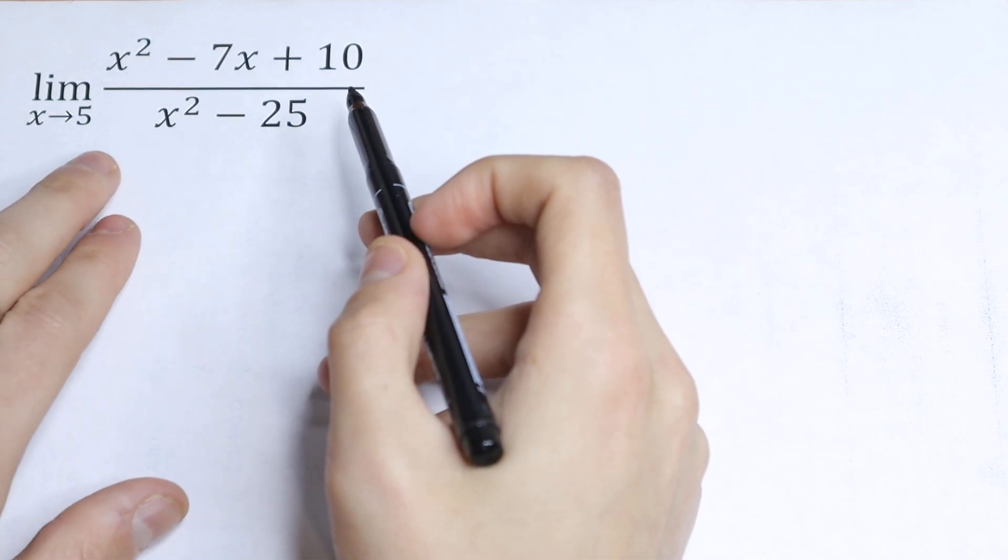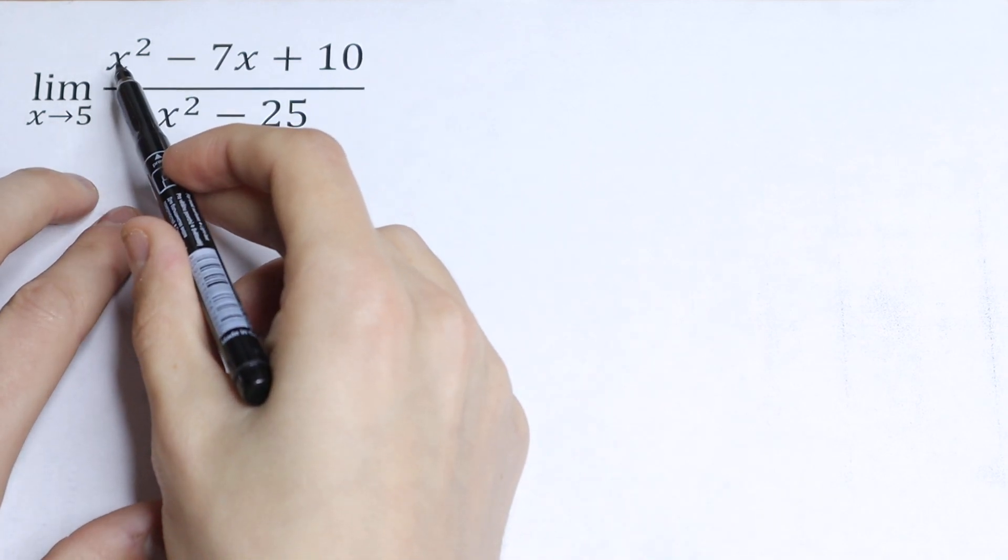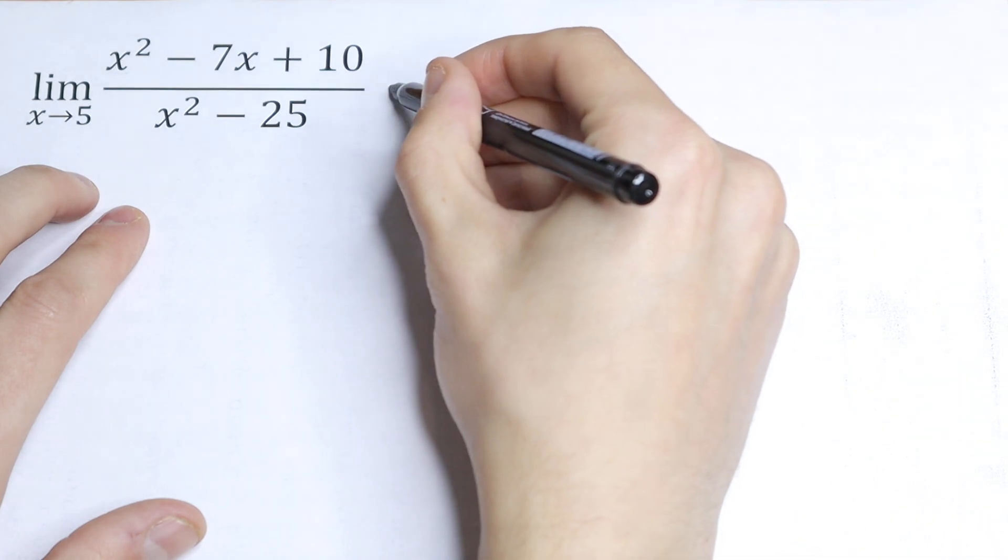What are we going to do? First, we can use direct substitution. Let's do this. We will have 25 minus 35 plus 10, which equals 0.